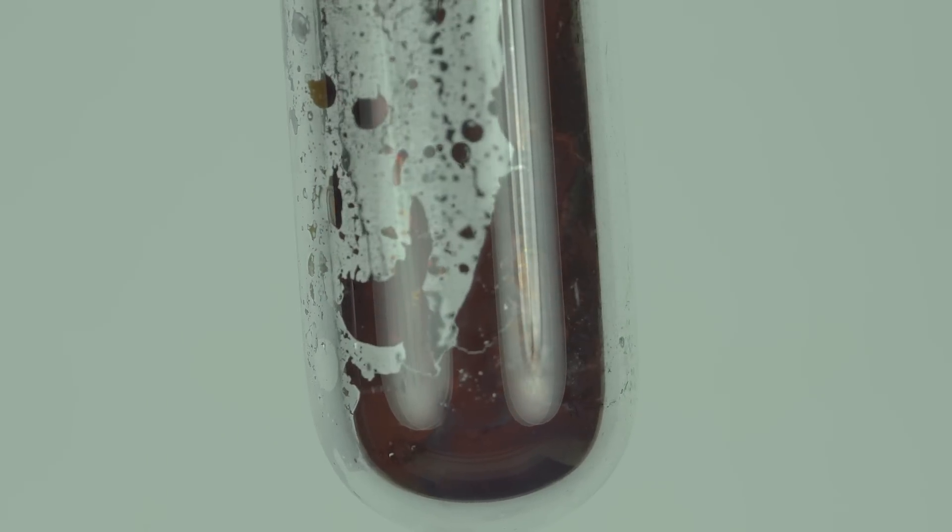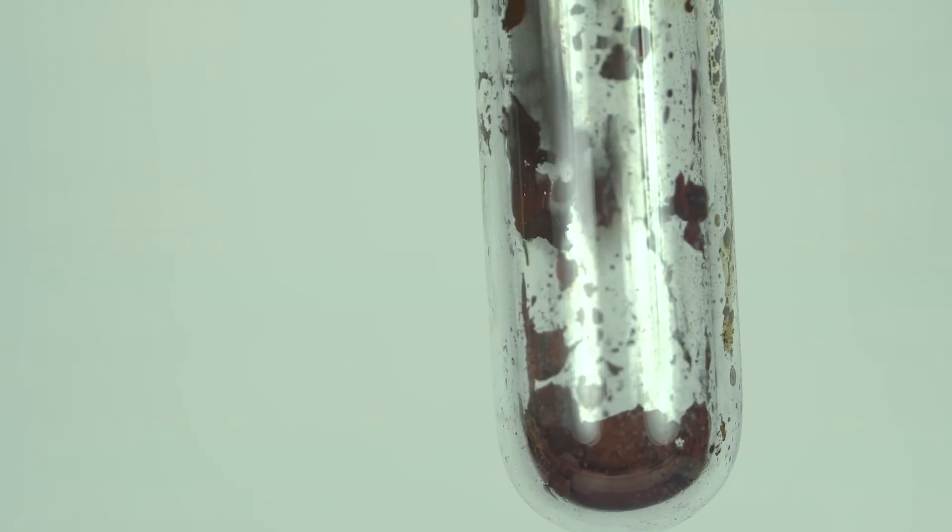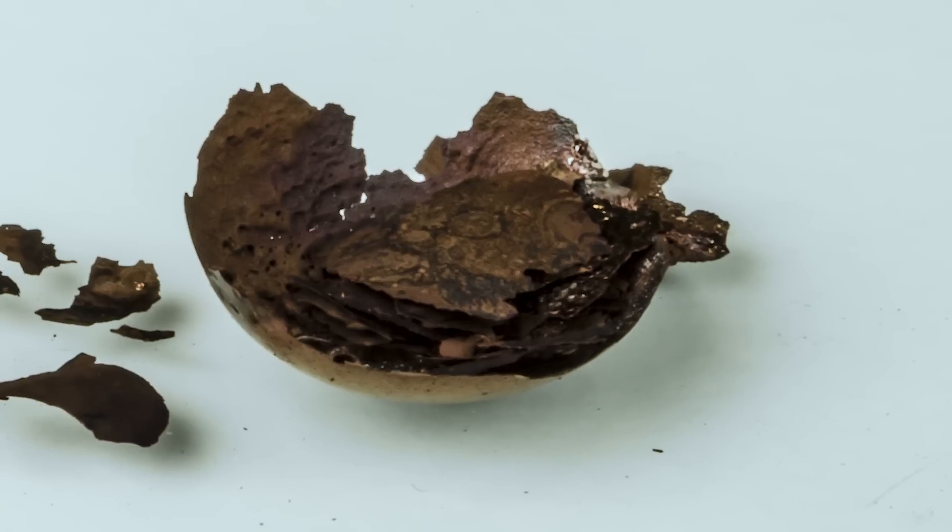Rhenium trioxide is a red solid with a metallic light, which resembles copper in appearance. It is the only stable trioxide of group 7.